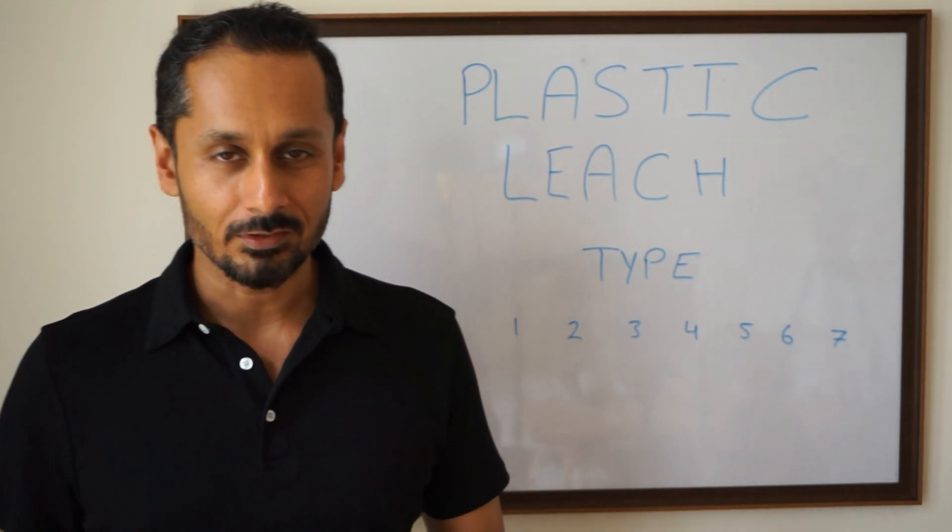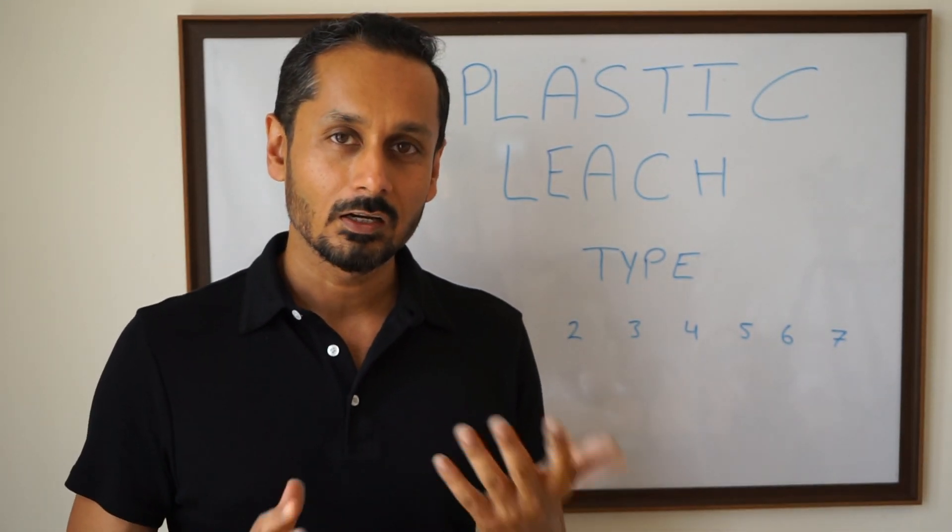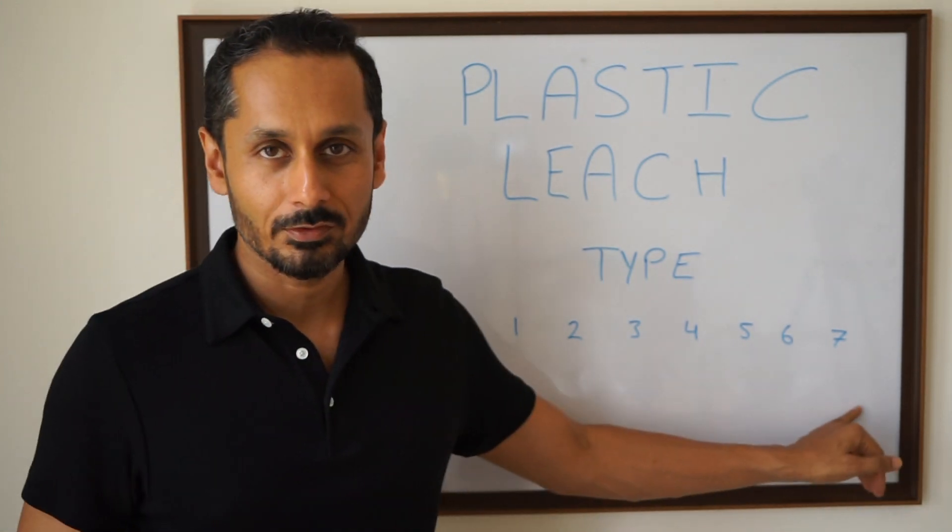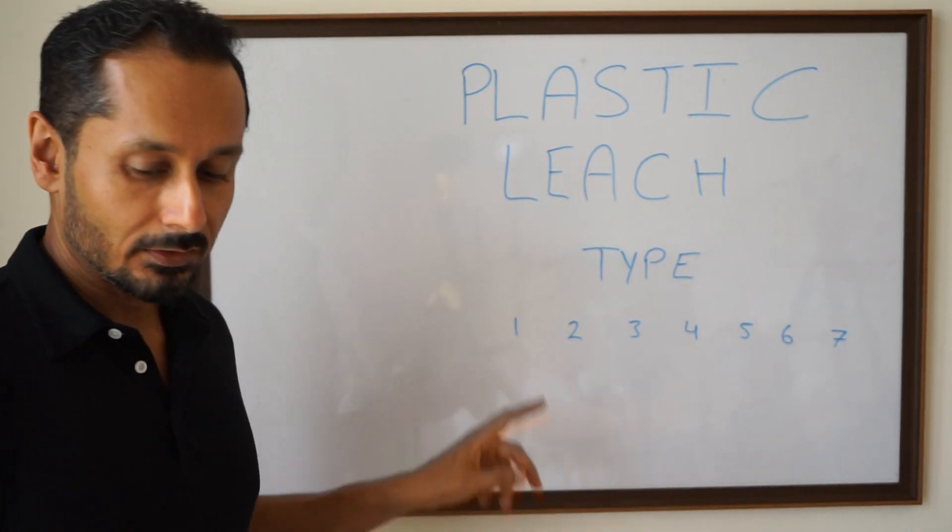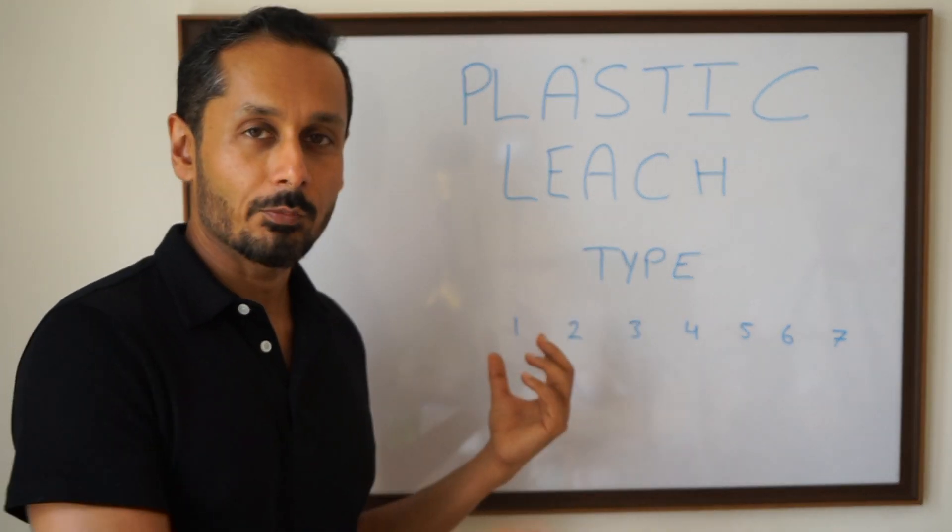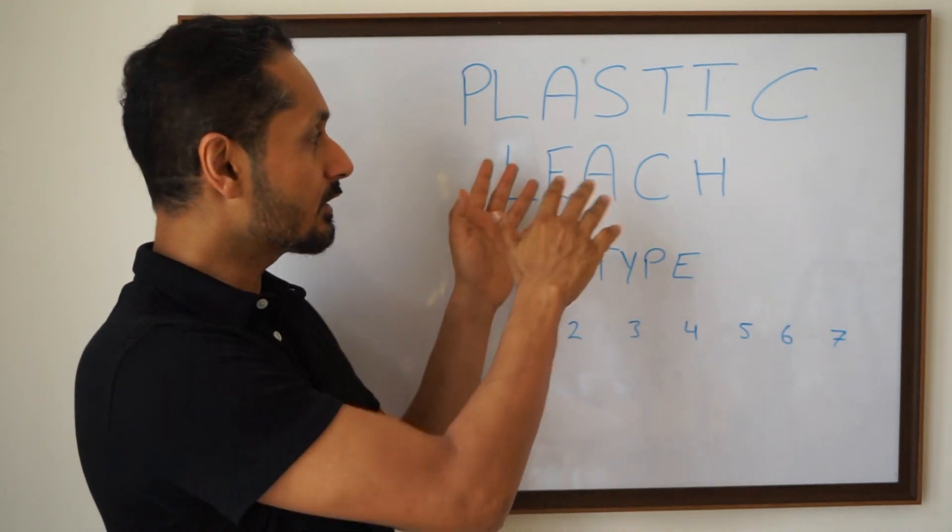So I was having a conversation with a patient of mine and I was shocked when she told me, 'Junior, the plastic comes in seven different types and type one is only meant for single use.' Type one is where you'll have the maximum amount of plastic chemical leach.